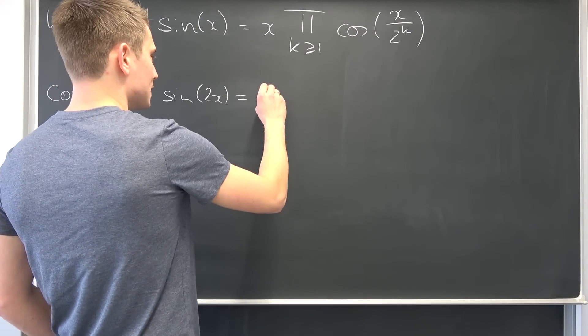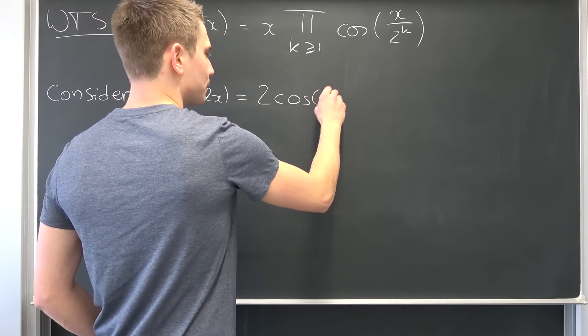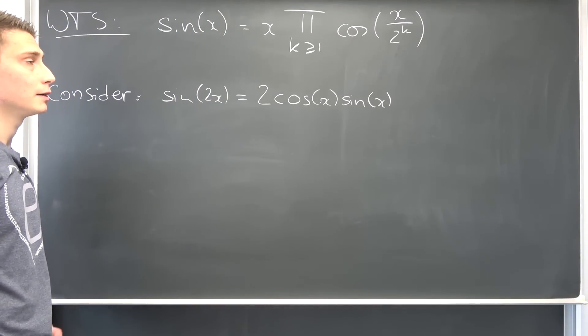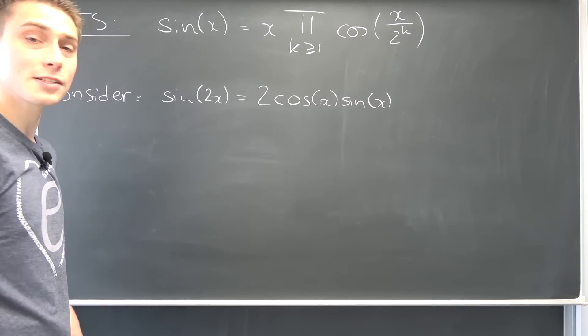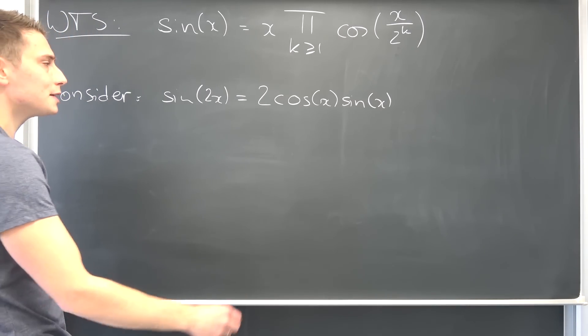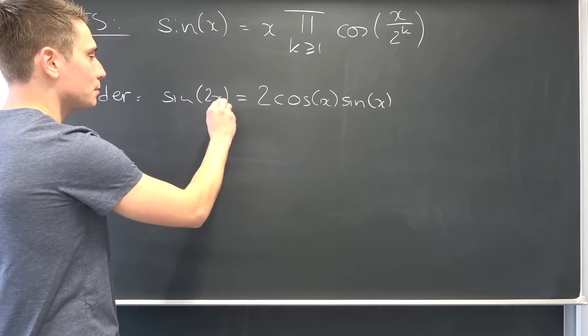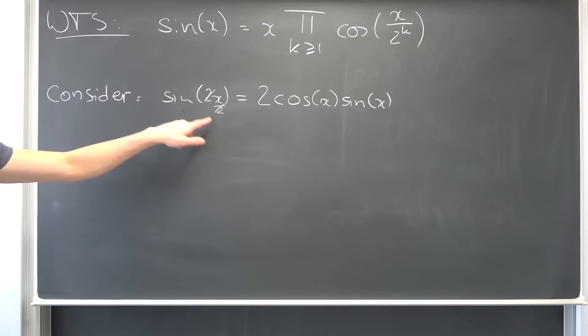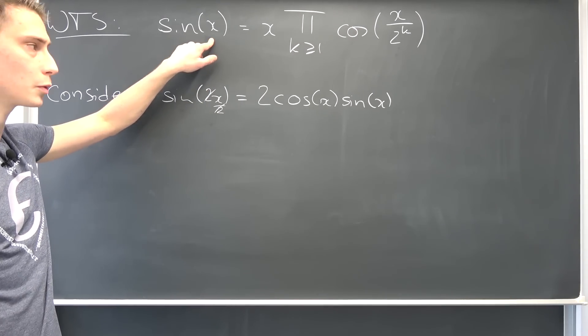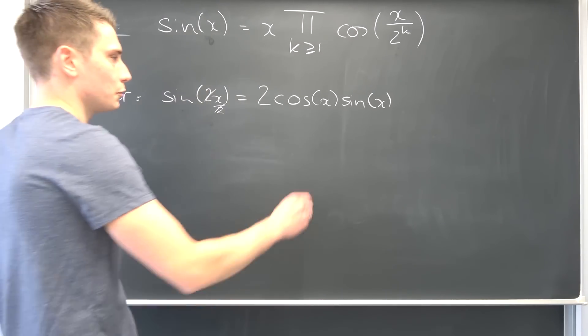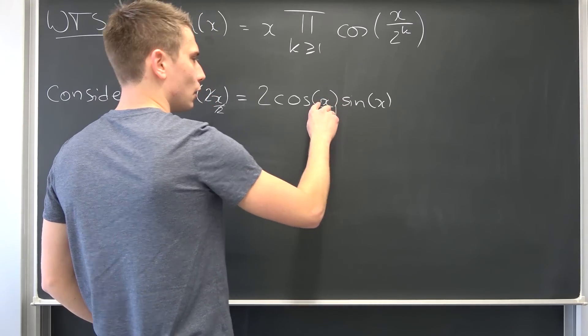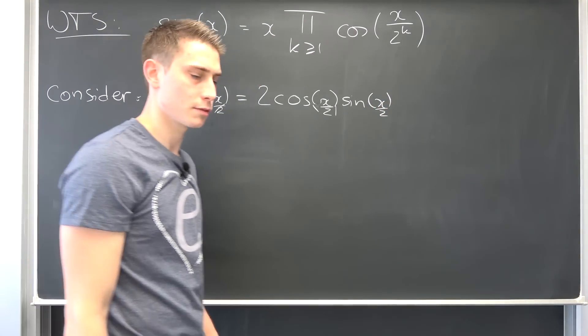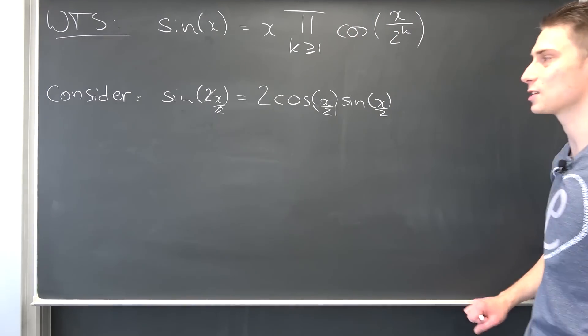Double angle formulas: sine of 2 times X is nothing other than 2 times the cosine of X times the sine of X. And now you might ask yourself, how would that even help? Well, I want you guys to consider a little transformation. Why not say that we let X be equal to X over 2. Then 2 and one half would cancel out to be sine of X, exactly what we need right here. But also if we do this transformation, we are going to end up with the cosine of X over 2 times the sine of X over 2. This is the first step to succeed in this problem.